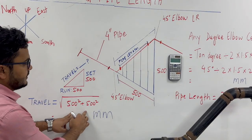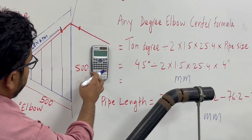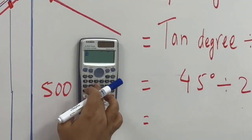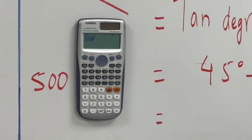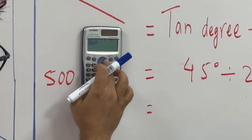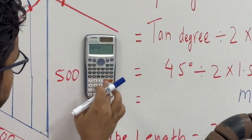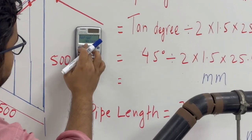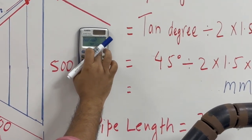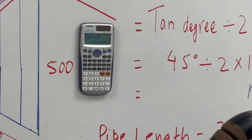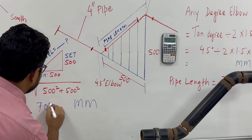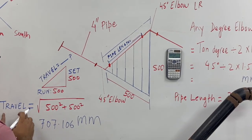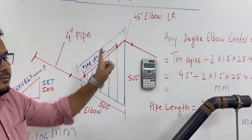Now here we will calculate travel. We have 500 squared plus 500 squared. The square root of 500 squared plus 500 squared equals 707.106 millimeters. So what we calculated is the travel — from this elbow center to this elbow center.